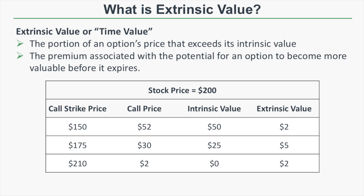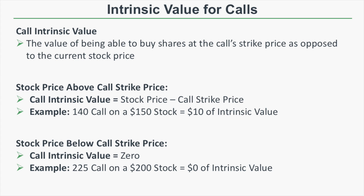With the stock price at $200 and a 150 call: intrinsic value is $50, and if the call's price is $52, that additional $2 is extrinsic value. For the 175 call, intrinsic value is $25; if the price is $30, that additional $5 is extrinsic. For the 210 call, there's no intrinsic value, but it's still worth $2 — all extrinsic. That $2 represents the potential for the stock to rise above $210, giving the call intrinsic value before expiration.